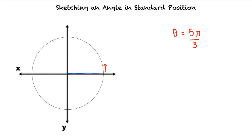We know that 5 pi thirds is between 3 pi halves and 2 pi. But 5 pi over 3 is closer to 3 pi over 2 than to 2 pi, so we can draw our angle as follows.